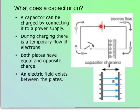So the end result is this plate is negatively charged. That plate is positively charged. They are equal and opposite.